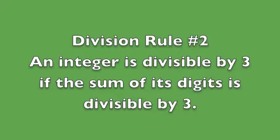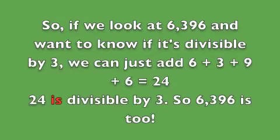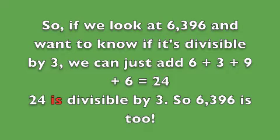Division rule number 2: an integer is divisible by 3 if the sum of its digits is divisible by 3. If we look at 6,396 and want to know if it's divisible by 3, we can just add 6 plus 3 plus 9 plus 6, which equals 24. 24 is divisible by 3.